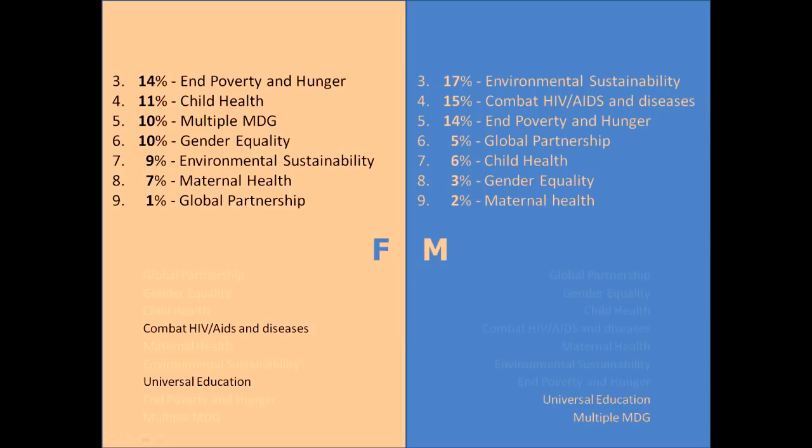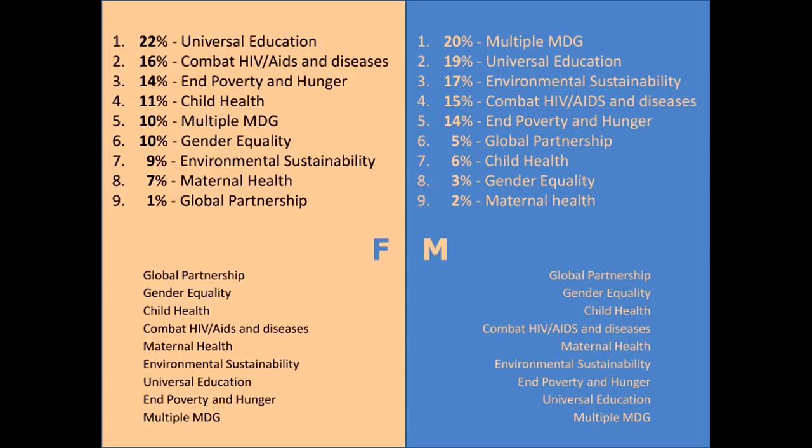Now we're going to choose the most popular MDG. Out of the four or five hundred people who submitted pictures, which is the most popular? Carolyn, which do you think is the most popular on the male side? Universal education. And Paul? I think the most popular would be universal education. Let's see — on the top spot, universal education. So Paul has a point. And multiple MDG on the guys' side. So surprising — universal education wins.